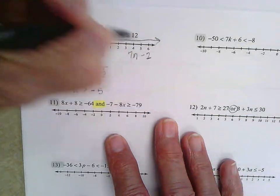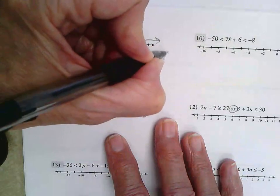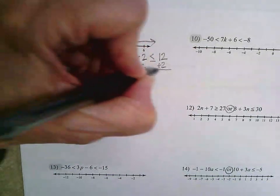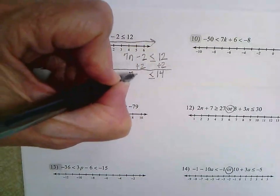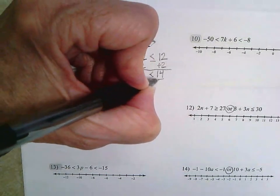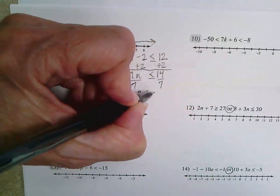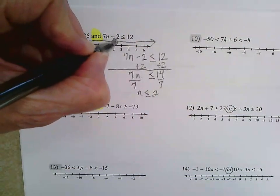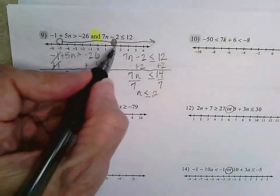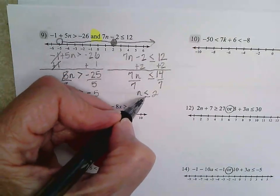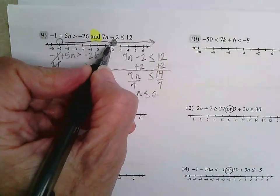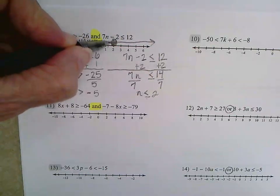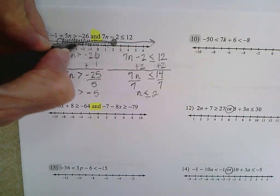Now I'm going to look at this side: seven N minus two is less than or equal to twelve. I'm going to add two to each side and get seven N is less than or equal to fourteen. Dividing each side by seven, I get N is less than or equal to two. Here's two — less than or equal to — so I'm going to have a closed circle. N has to be less than that, so my arrow is going to come this direction. The place where my two lines overlap is the solution.